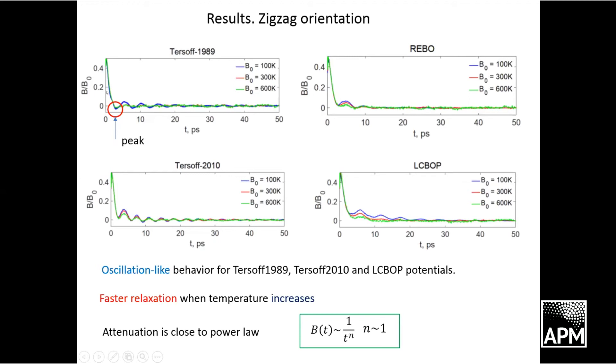When we increase the background temperature, we see that the relaxation goes faster. For example, this green line shows no oscillation here compared to the blue line. Also if we try to approximate this relaxation profile, we could obtain that it is close to power law, which agrees with analytic results. These results are for zigzag orientation.